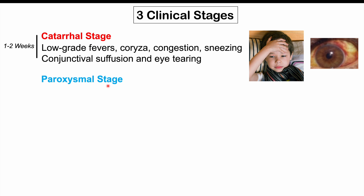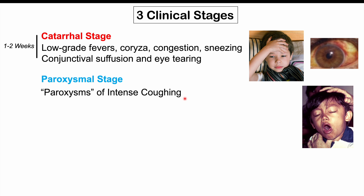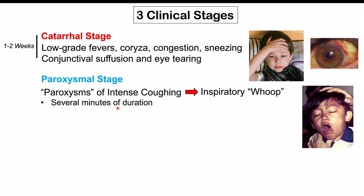The second stage is the paroxysmal stage, which involves paroxysms of intense coughing — sudden onset episodes that can be extreme and severe, lasting several minutes at a time. This is where we have the inspiratory whoop: after coughing for many minutes, the patient runs out of breath and has to take a big breath in, producing that whoop sound. We generally only see the inspiratory whoop in children between six months and five years of age; older children, adolescents, and vaccinated adults typically do not have it.